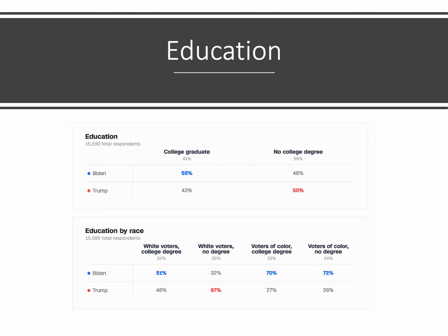Here's another key variable: education. Biden won college graduates pretty decisively, while Trump won with people who don't have a college degree. This takes us back to something Trump said at a rally — 'we love the poorly educated' — and the crowd cheered. Those without a college degree did favor him. But you can break it down by race too: remember how Trump won with white voters overall? Among white voters with a college degree, Biden actually won those voters. So education moderates the effect of race and made quite a difference.